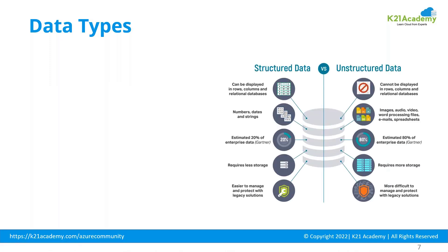Data comes in all forms and shapes. Structured data is found in tables of databases — numbers, dates, and strings — and makes up about 20% of enterprise data. The remaining 80% is unstructured or semi-structured: photos, tweets, reviews, JSON documents, wide column families, sound files, video files, and so on. This unstructured data is big data with high velocity, high volume, and high variety — but it also carries very high value.